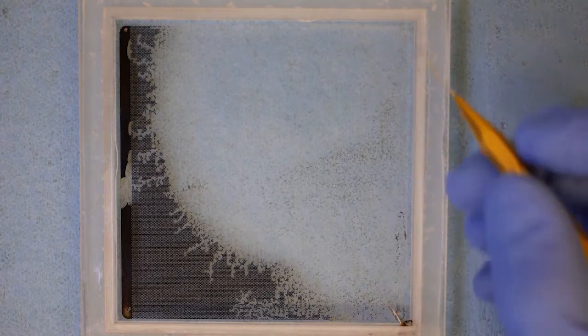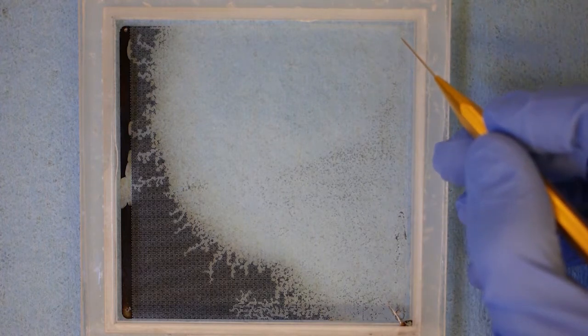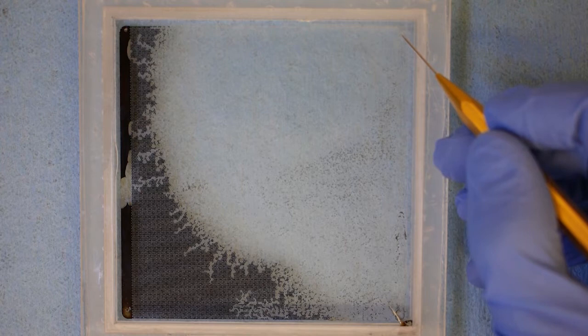Let's take a close look at the micromodel that is used for this test. Steam is injected at the top right of the chip here and emulsion is produced from the bottom right here.